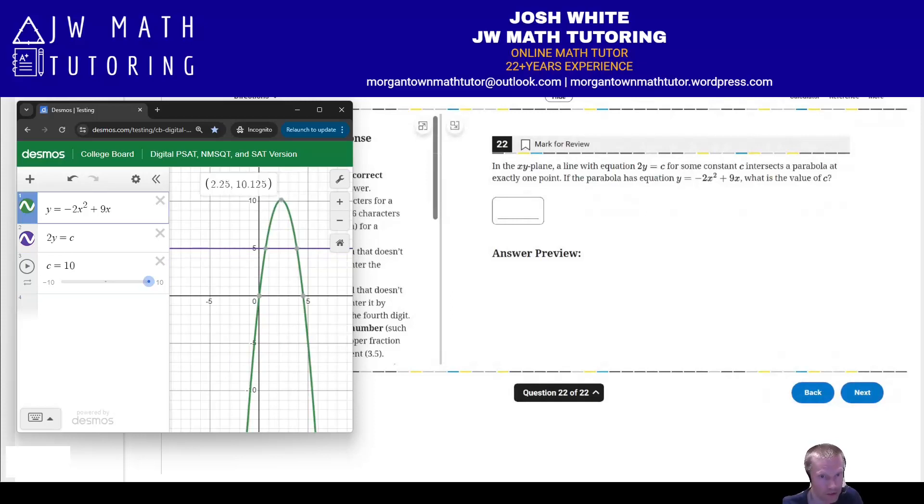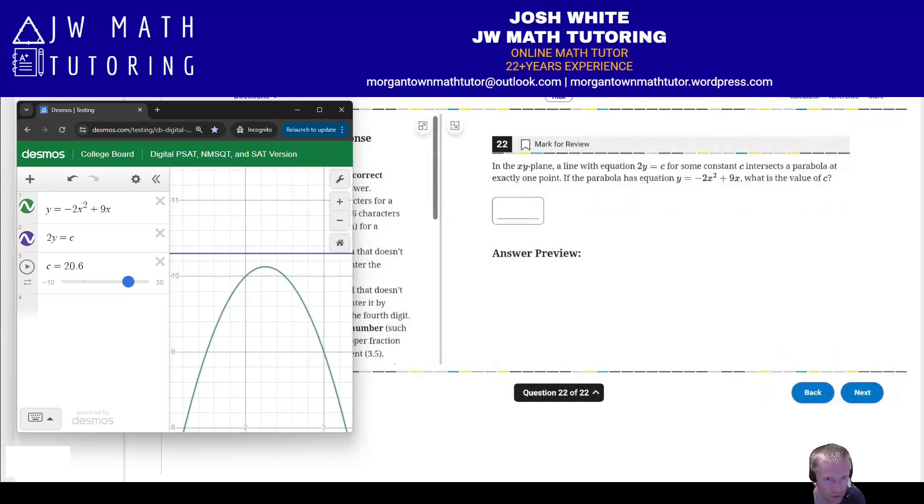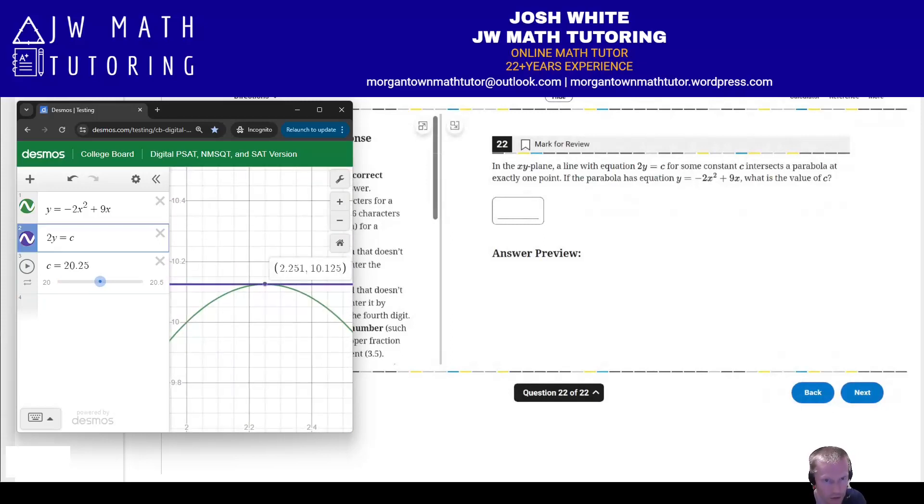Okay, so now I'm just looking for the intersection of the horizontal line and the parabola at exactly one point. Notice that's going to happen at the vertex up here at 10.125. So it looks like I need to increase my C value, so I'll just jump it up to 30. All right, right around there. We'll zoom in. Okay, 20.6, too much. 20, too low. So we'll go 20 to 20.5, maybe like 0.01. Getting closer, getting closer.